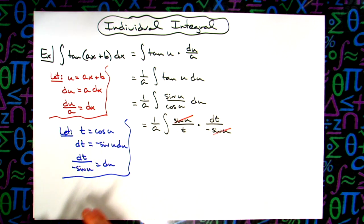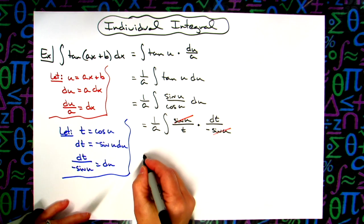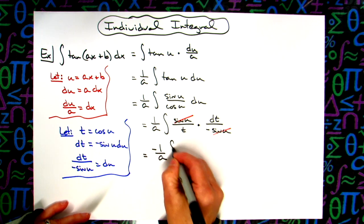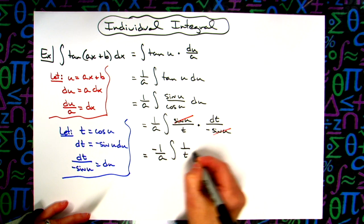I still have a negative that needs to be pulled out. So I'll have negative 1 over a times the integral of 1 over t dt.